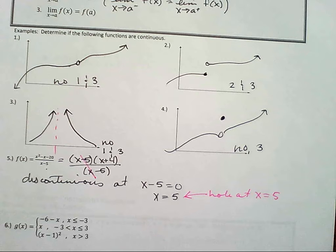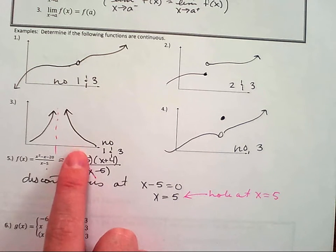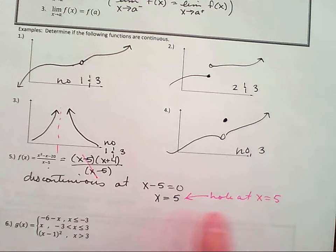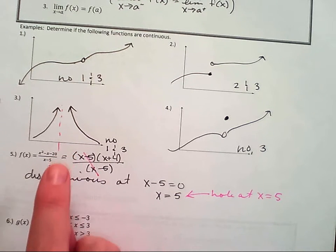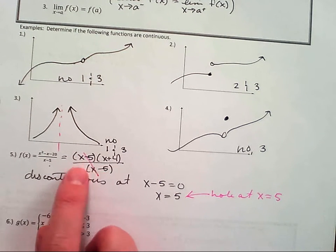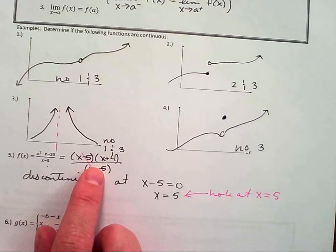So there's a hole at x equals five. Remember, how do we know if there's a vertical asymptote? There's a vertical asymptote if I simplify and then set the denominator equal to zero. So here, because I could simplify and cross it out, that means it's a hole. But if I simplify and cross out and then I set the denominator equal to zero and I get a value, that tells me there's a vertical asymptote at that point.